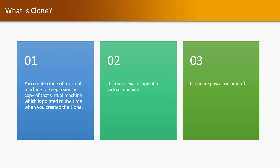What is a clone? Creating a duplicate copy of any virtual machine is a clone. You create a clone of a virtual machine to keep a similar copy pointed to the time when you created it. For example, if you have virtual machine A and want to create a copy with the same applications and operating system, you do not need to rebuild the entire environment — you just create a clone. The cloned machine will have all data similar to machine A. A clone can also be powered on or off and used in a production environment.